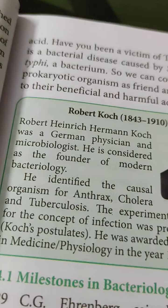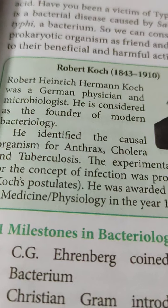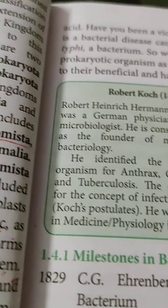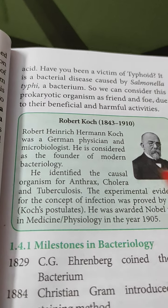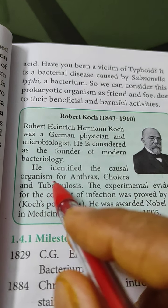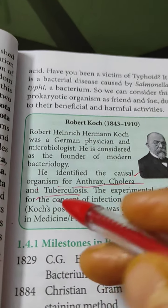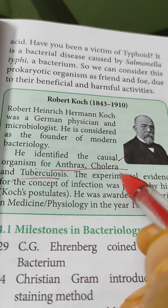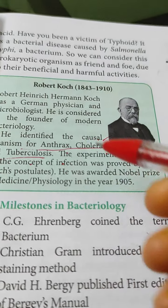Robert Koch's contribution: he identified the causal organisms for anthrax, cholera, and tuberculosis — meaning he identified the names of the bacteria causing these diseases. That was his important contribution.